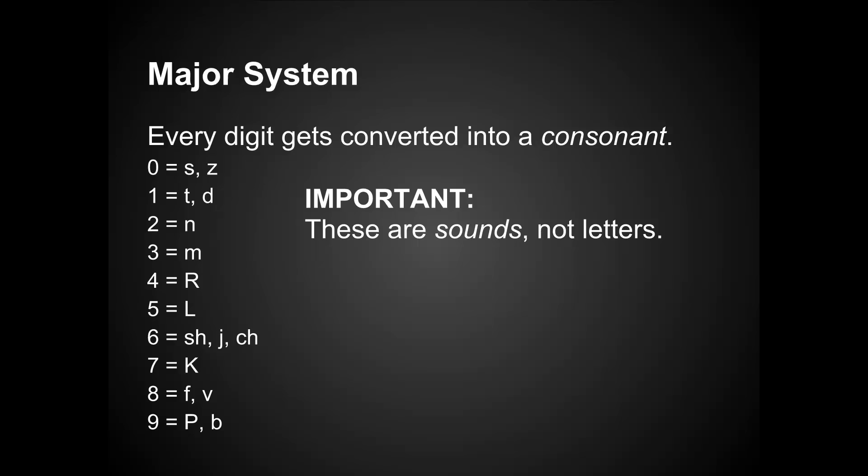You can remember these because Z is the first sound in zero. 1 looks like a T, and T and D are phonetically similar. N looks like a 2 on its side. M looks like a 3 on its side. 4 looks kind of like a backwards R. 5, if you picture the Roman numeral for 50, is an L — so 5 is L. 6 is SH as in sheep, J as in jack, or CH as in cheese — SH, J, and CH are all similar phonetic sounds. 7 is a K sound — it could also be the C in cards, because it's the sound that matters, not the letter. 8 looks like a cursive F, and F and V are phonetically similar. 9 looks like a backwards P, and P and B are phonetically similar.